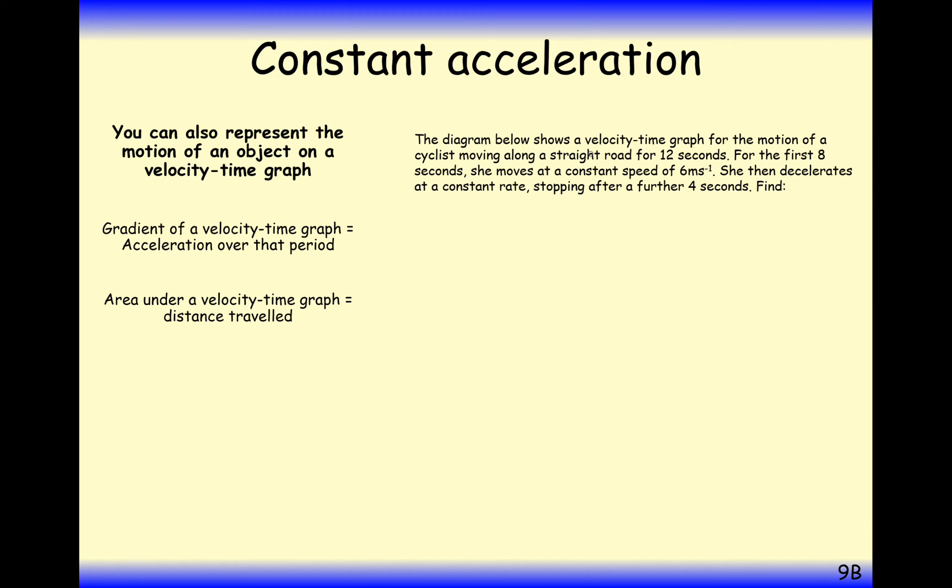The question here says, the diagram below shows a velocity time graph for the motion of a cyclist moving along a straight road for 12 seconds. For the first 8 seconds, she moves at a constant speed of 6 meters per second. She then decelerates at a constant rate, stopping after a further 4 seconds.